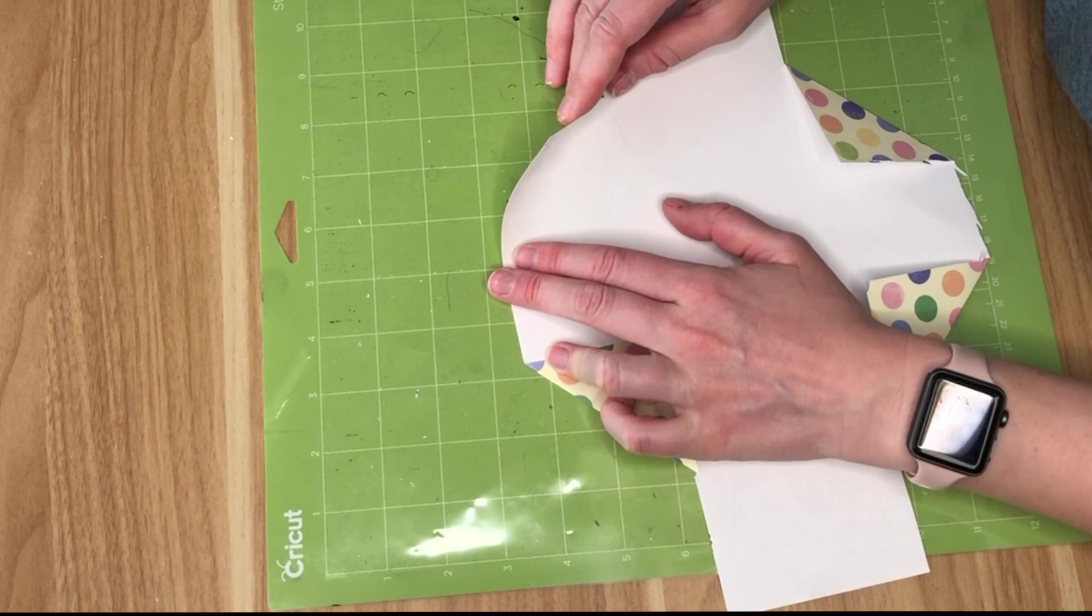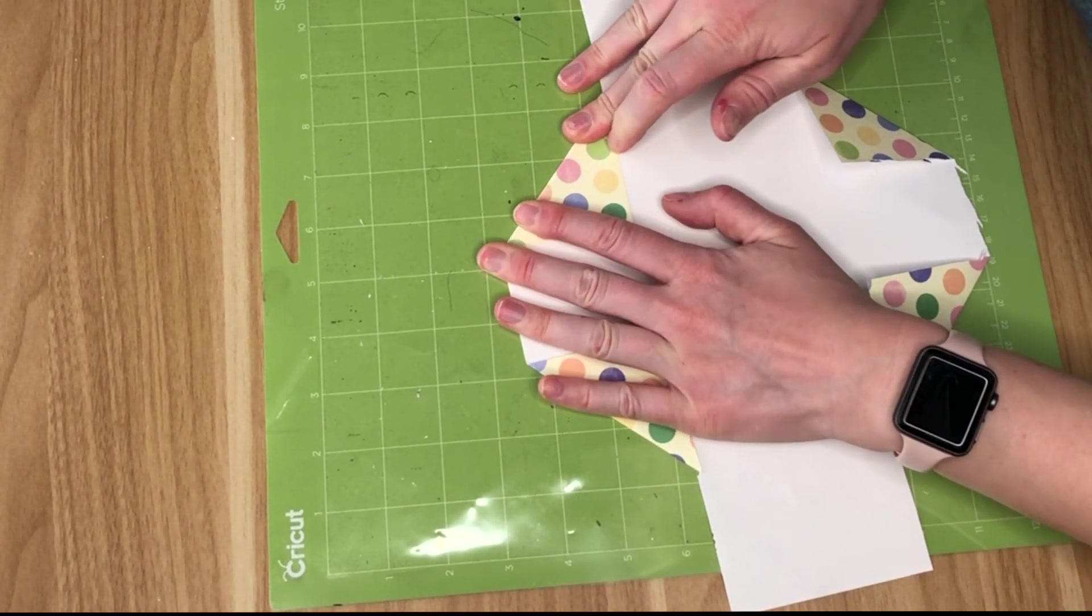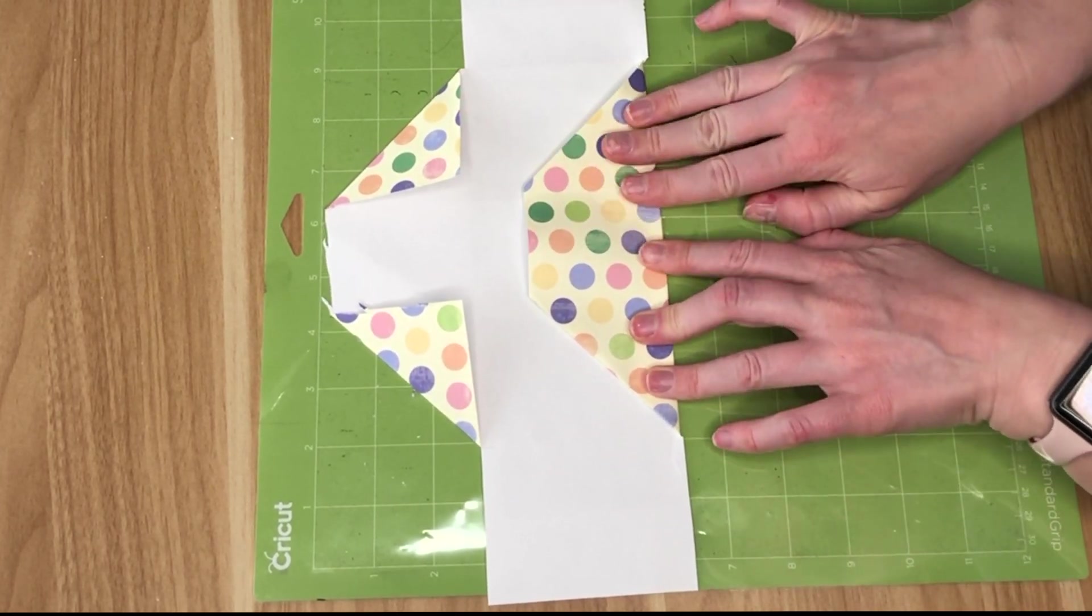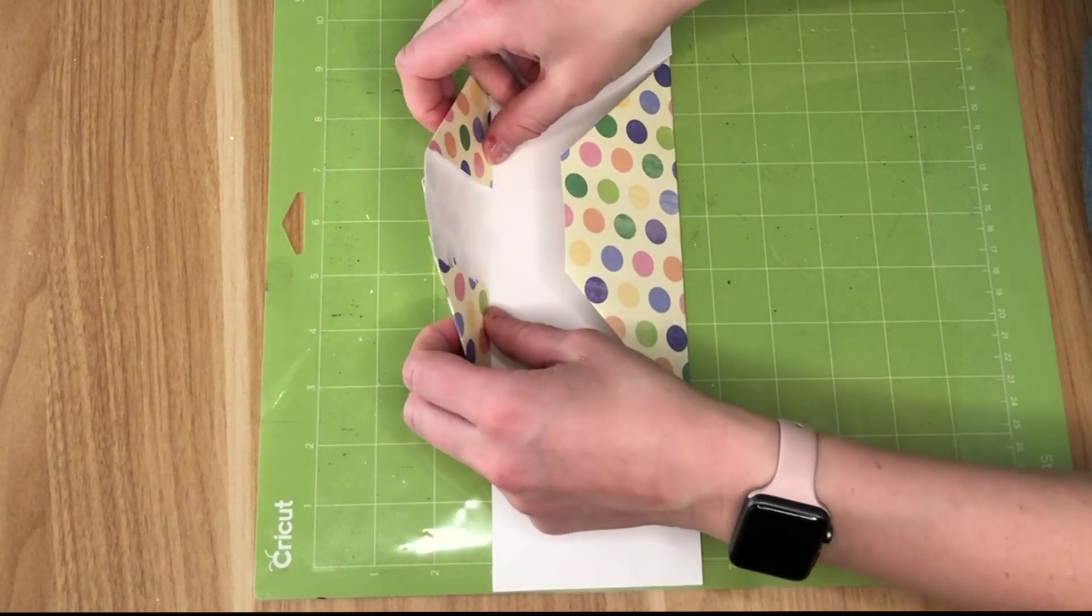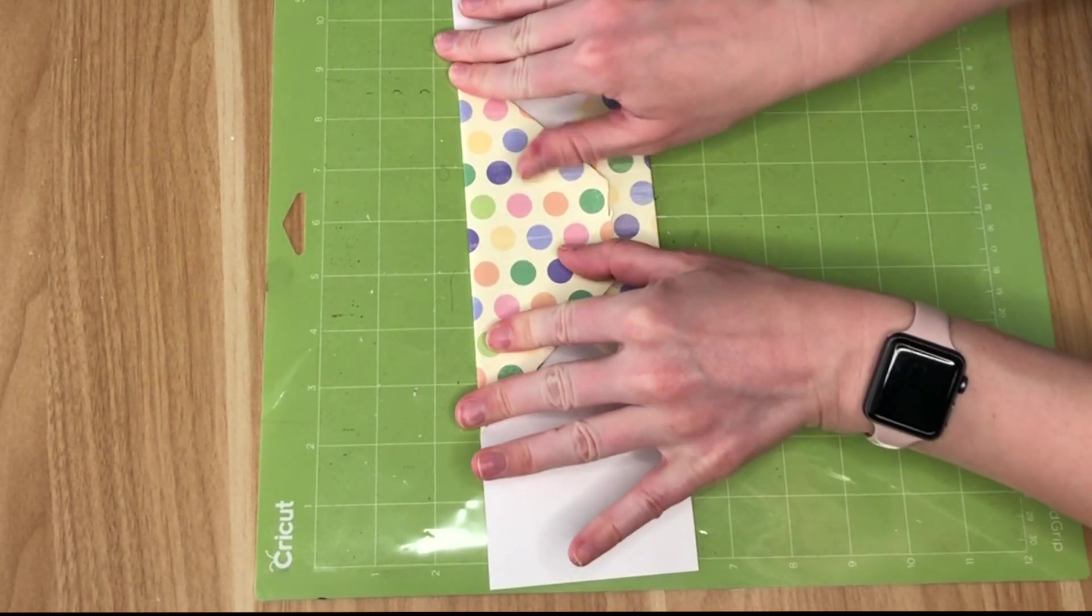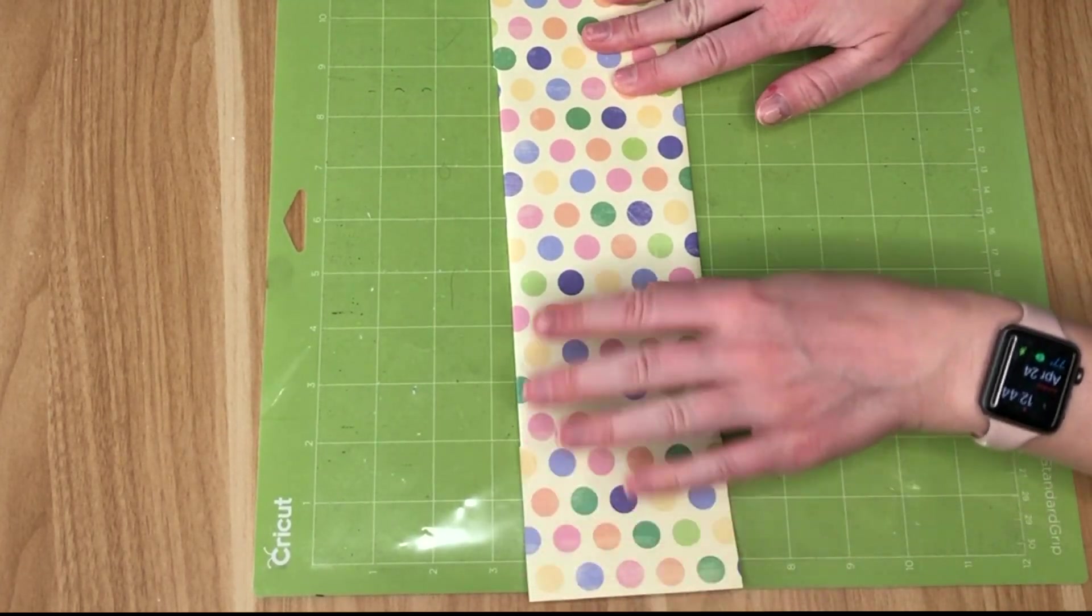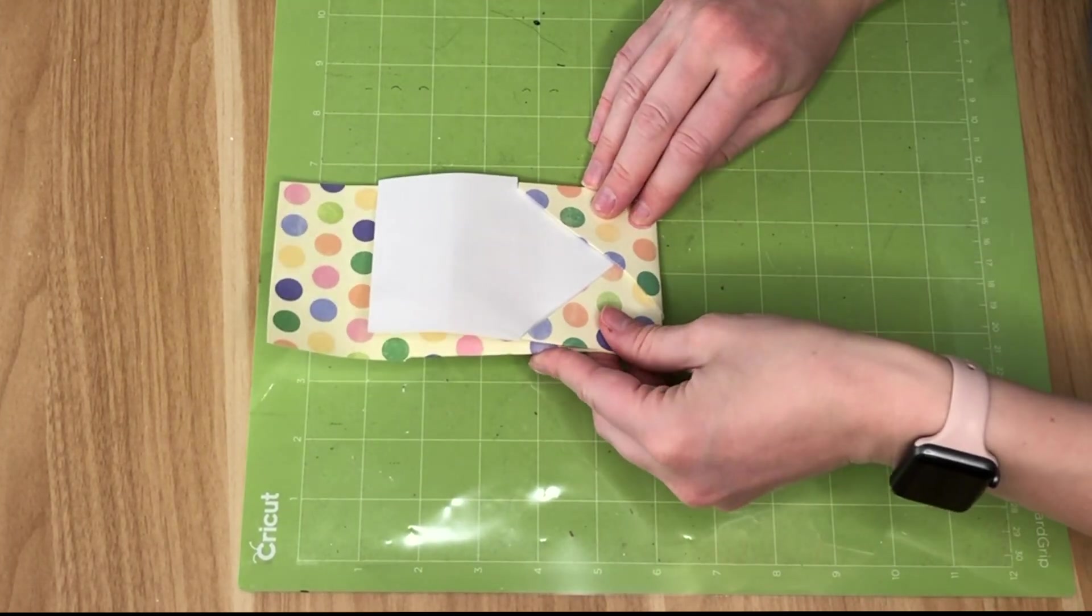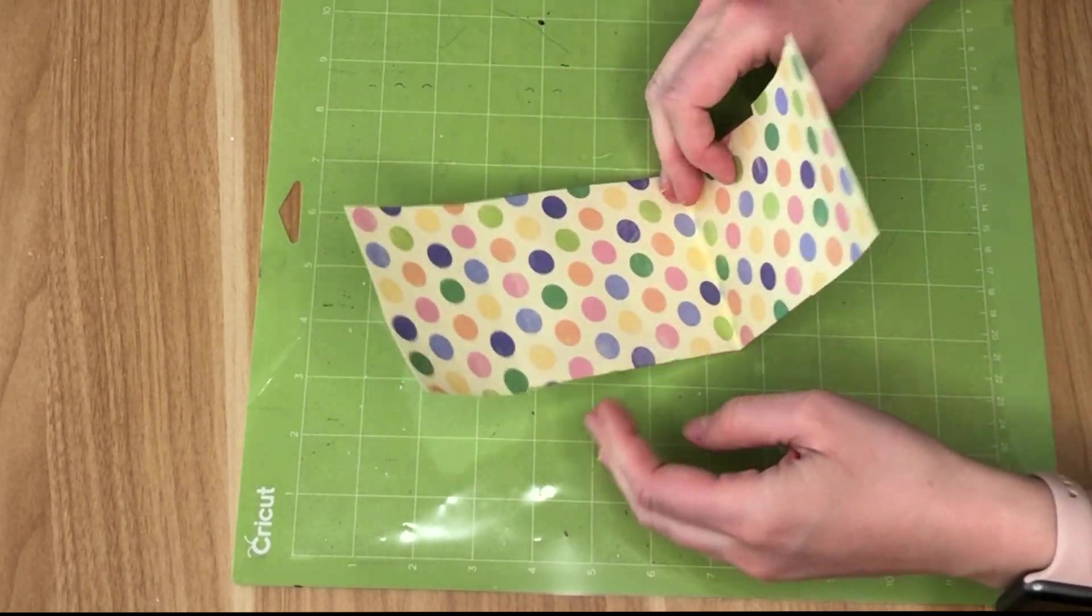So again, I'm just folding these all in towards the center of our teabag favor. Once that is done, we are going to fold each of these sides into the center and one will overlap the other. Doesn't matter which one you'll see in a second why. So after we fold those, we are then going to flip our teabag favor over and you can start to see that it's really coming together. So then we are going to fold each of the sides in towards the center.